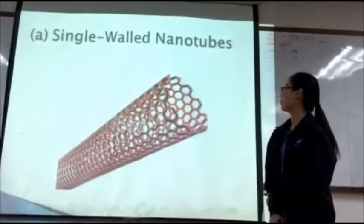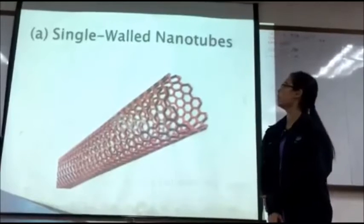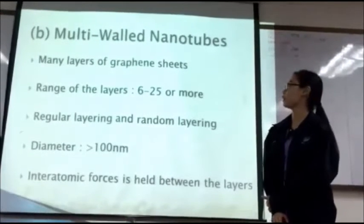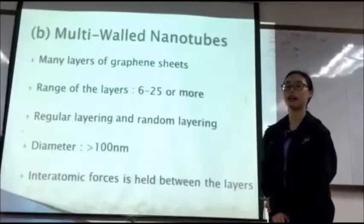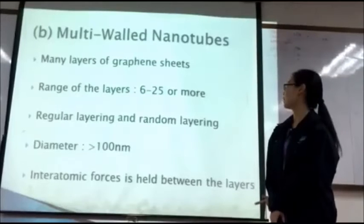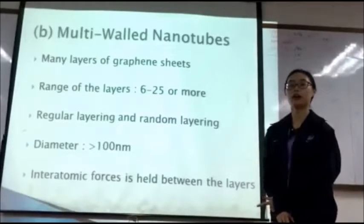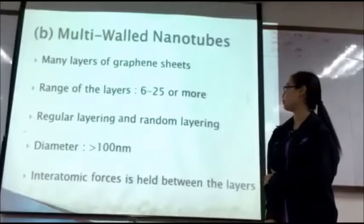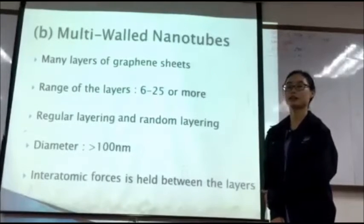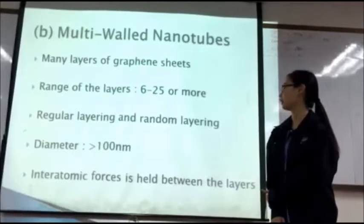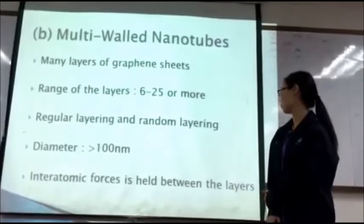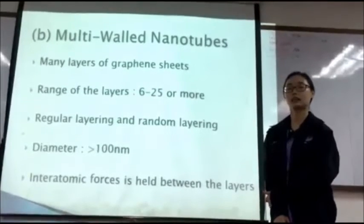This is how single wall nanotubes look like. Next, the multi wall nanotubes. Multi wall nanotubes have many layers of graphene sheets, where the range of layers is about 6 to 25 or more. It has regular layering and random layering, and its diameter is more than 100 nanometers. There is also an inter-atomic force held between the layers together.